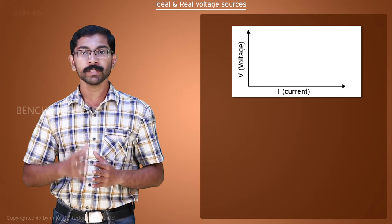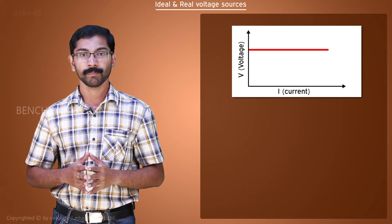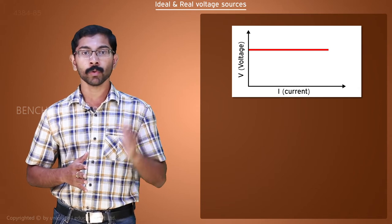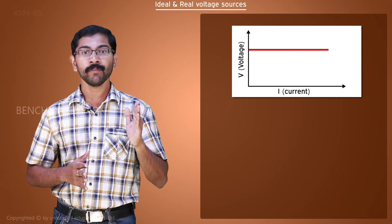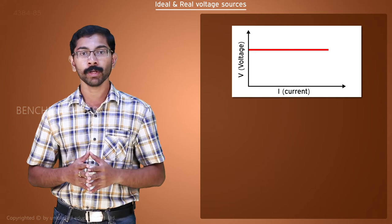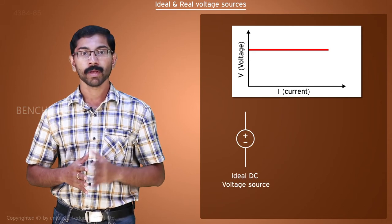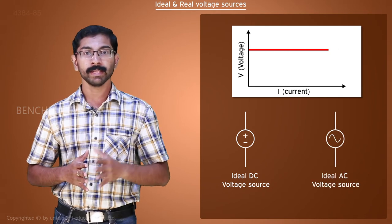What makes a voltage source ideal is the Volt Current Characteristics. An ideal voltage source can provide any amount of current without any variation in its terminal voltage. It is represented in a circuit by this symbol. For an AC voltage source, the circuit symbol is like this.